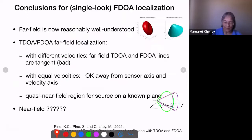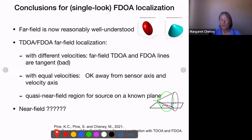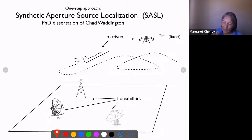In summary for the geometry: the far field is reasonably understood. In the unequal velocity case we get cones; in the equal velocity case we get reasonable but not toroidal shapes. Using both TDOA and FDOA for localization is okay with equal velocities, and okay in this quasi-near-field region for unequal velocities. The near-field unequal velocity case still has open problems — there's interesting algebraic geometry to study.